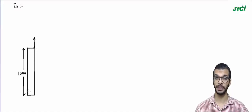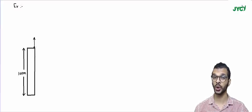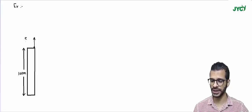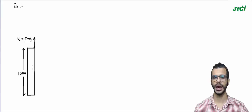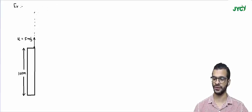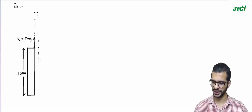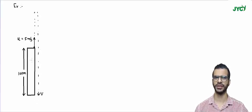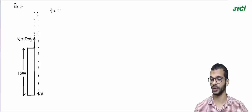In this example there is a 100 meter tall building and a man is standing on top of the building. The man has thrown the ball in the vertically upward direction with a velocity of 5 meter per second. So the initial velocity of the ball is 5 m/s. The ball goes up, velocity becomes zero, then the ball starts coming down and hits the ground. What is the total time taken by the ball to hit the ground?